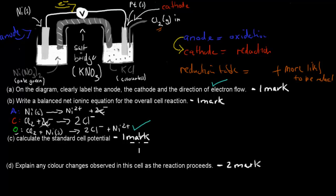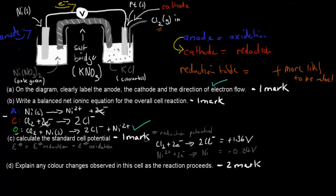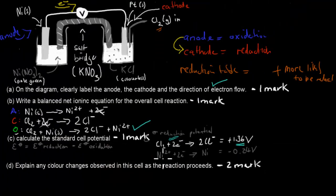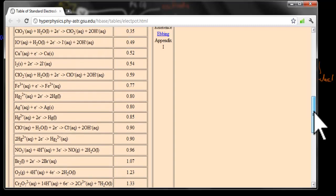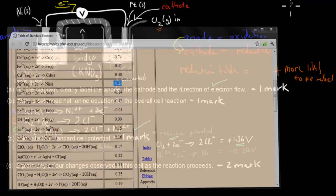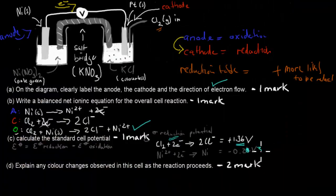Part C asks us to calculate the standard cell potential using the reduction potential table. The standard cell potential equation uses E°(reduction) for the cathode and E°(oxidation) for the anode. Chlorine is being reduced, so we take its value directly from the table: +1.36 V. Nickel has a reduction potential of −0.23 V, as read from the table.